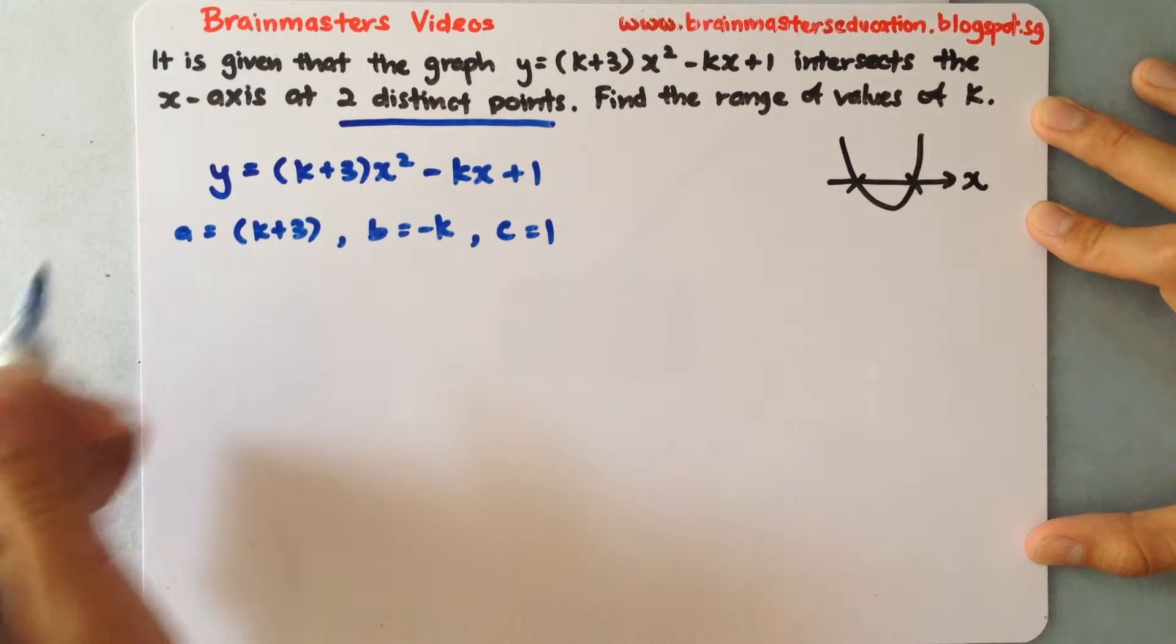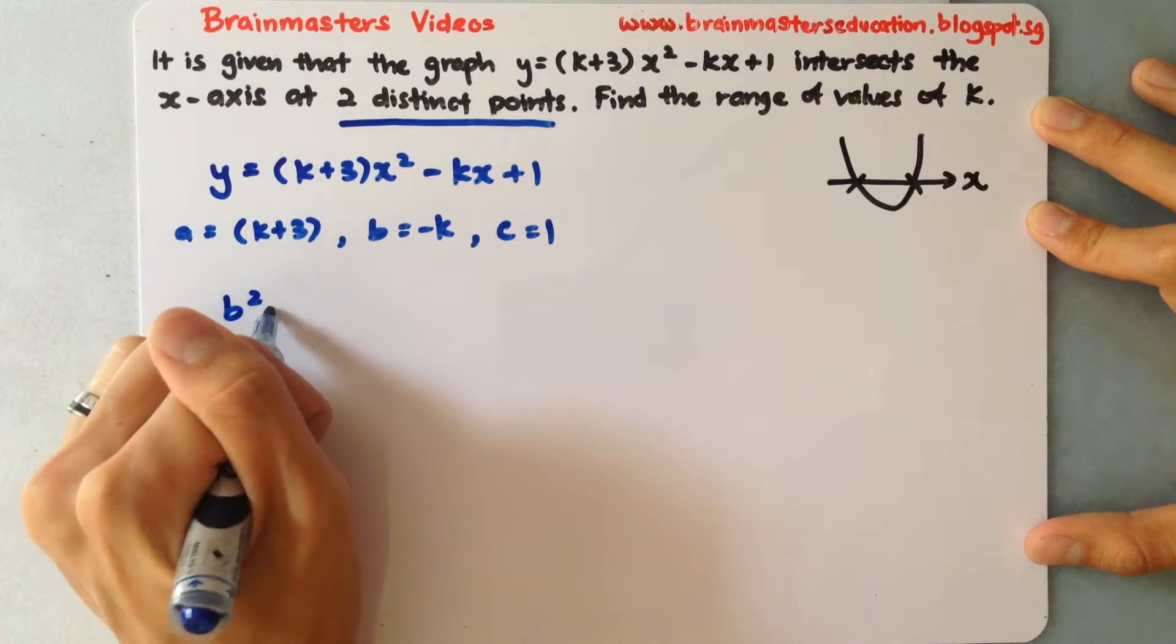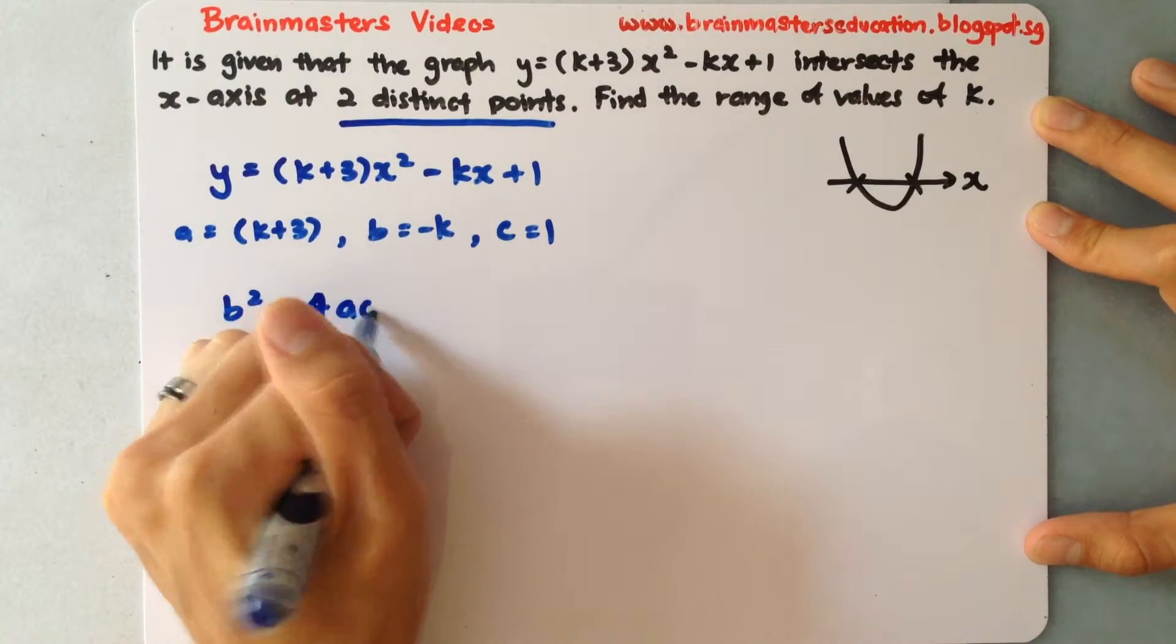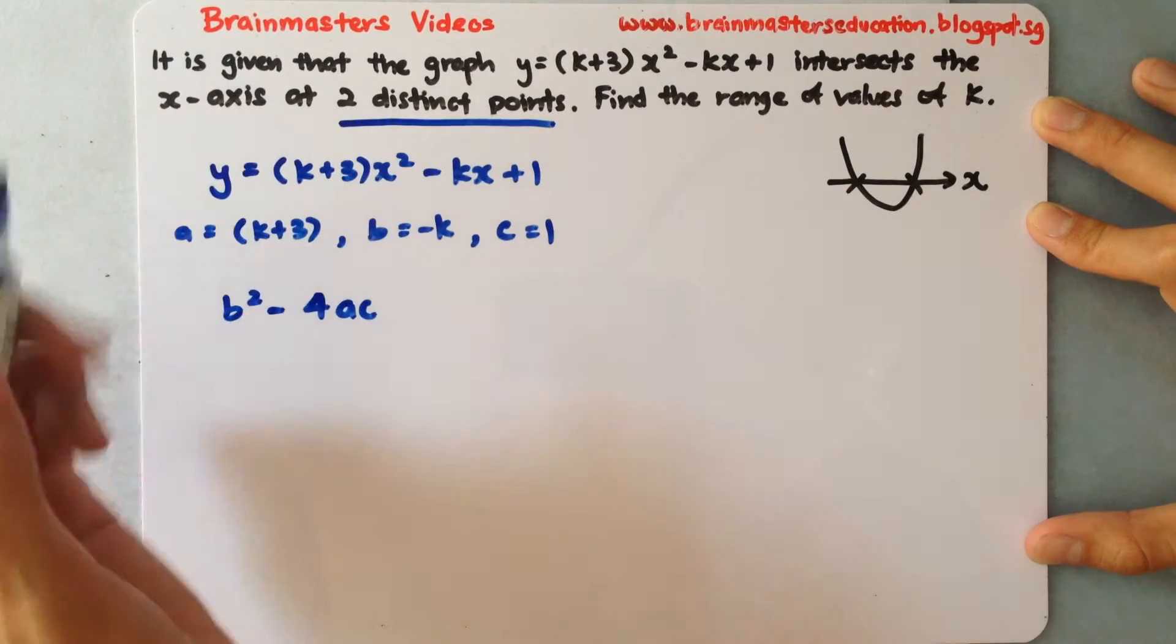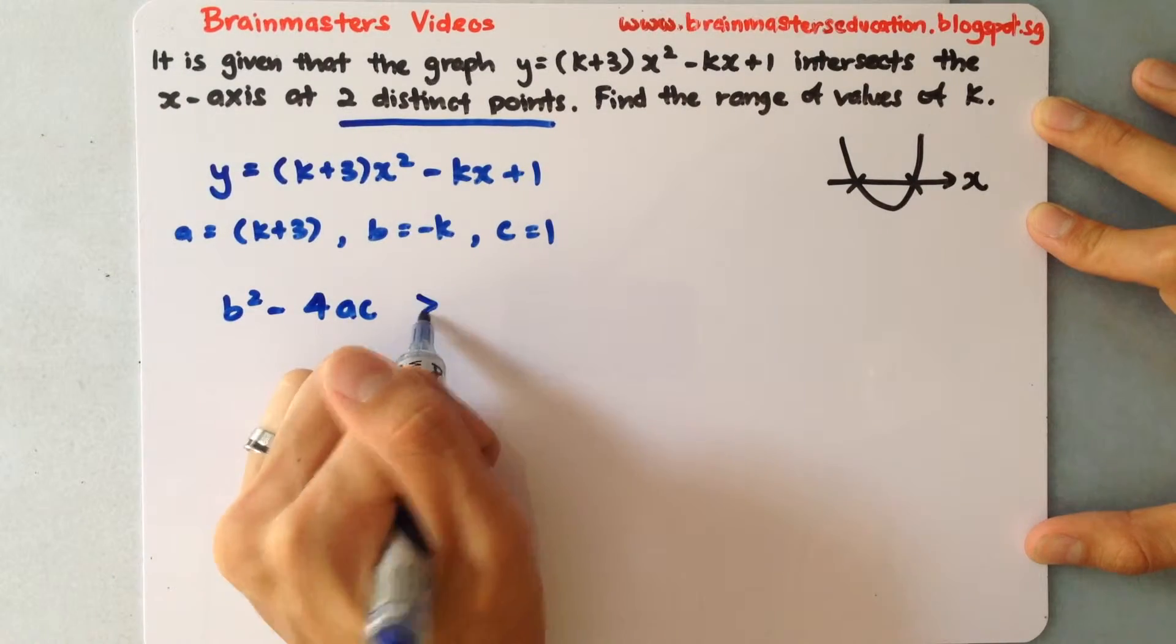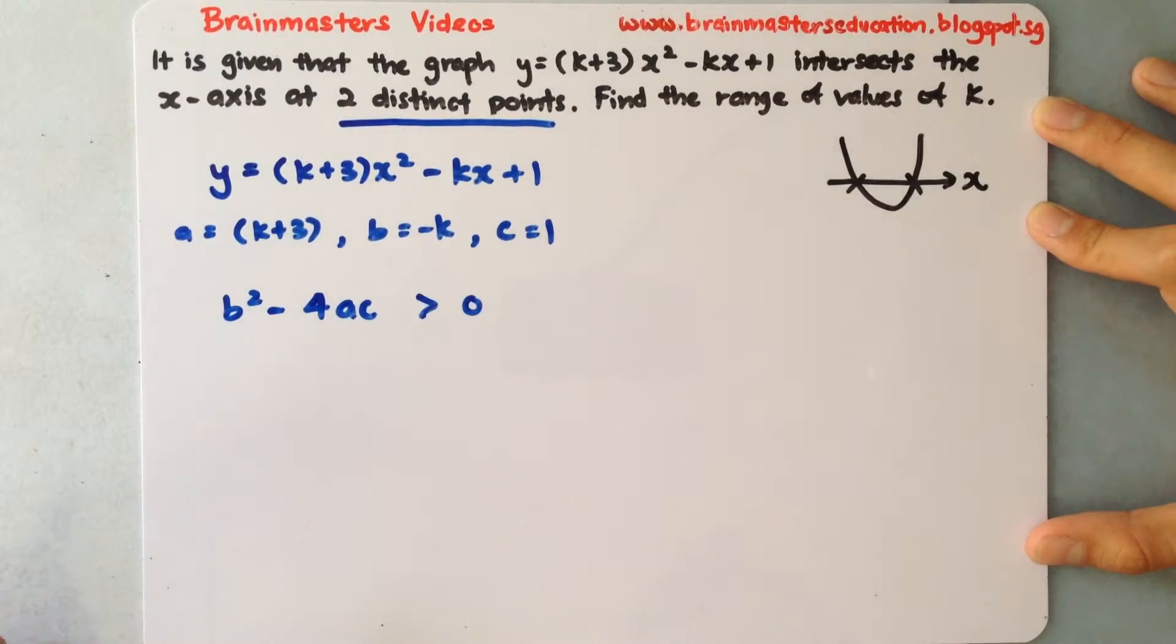So my discriminant is b square minus 4ac. And since they say it's two distinct points, I will know that it will be more than 0. To find out how to differentiate the kind of sign, you can actually go to my previous video to check it out.